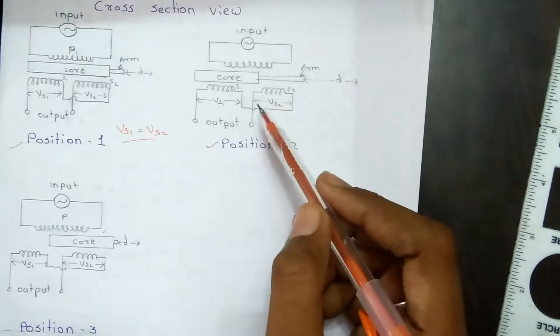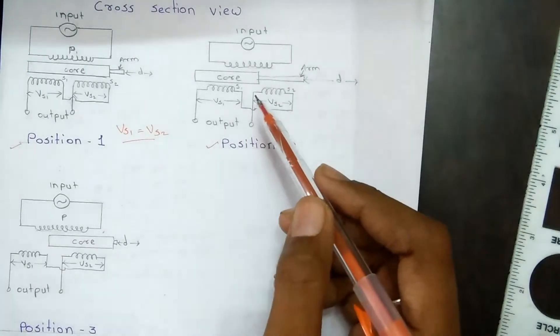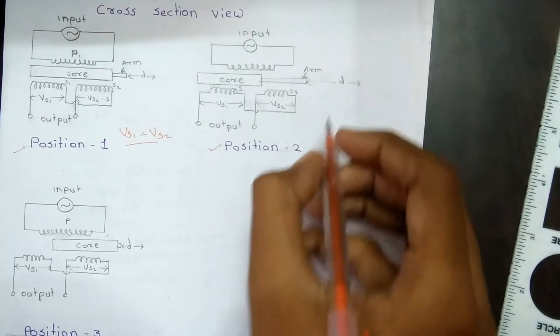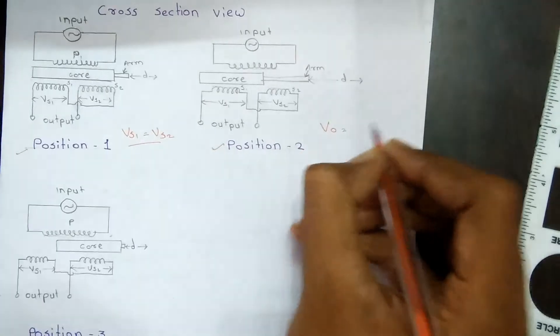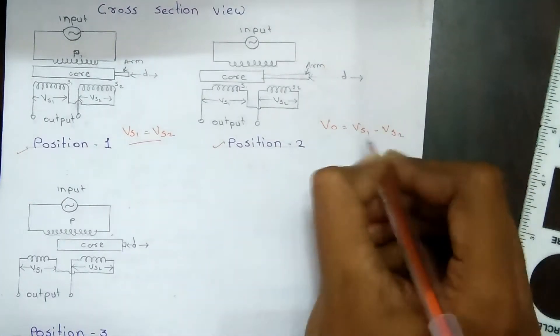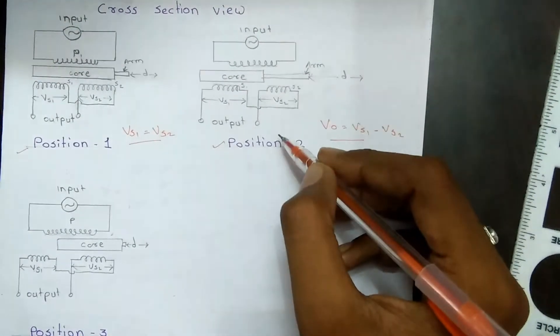Hence, the output voltage is given as VO = VS1 - VS2 at the second position.